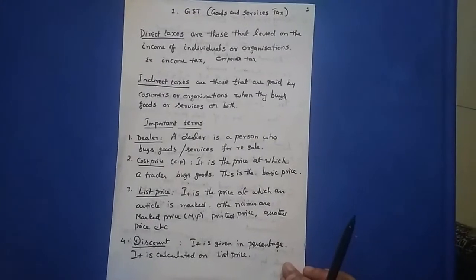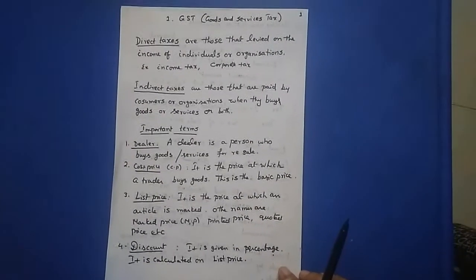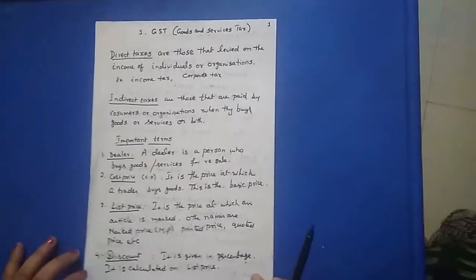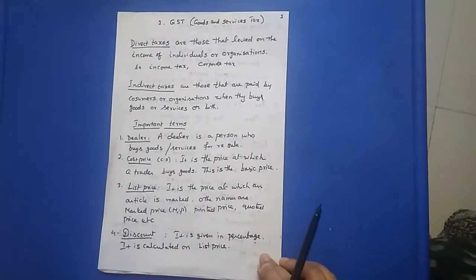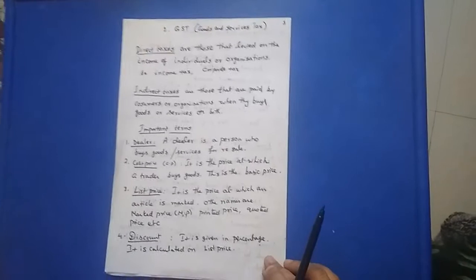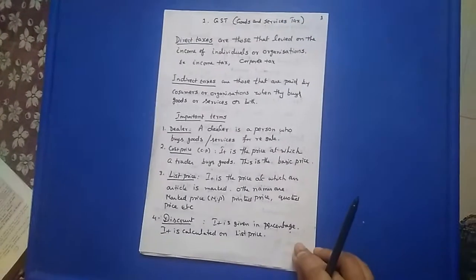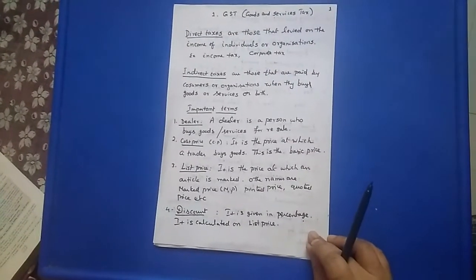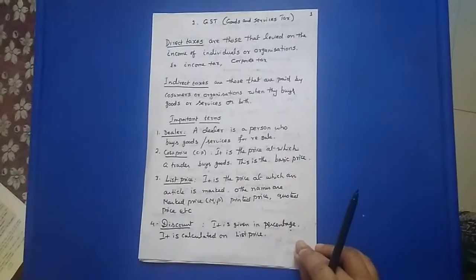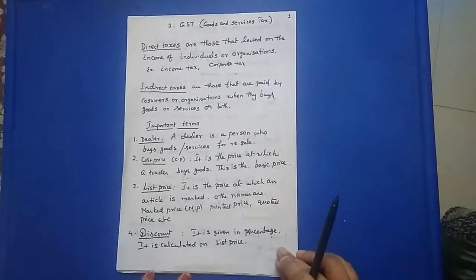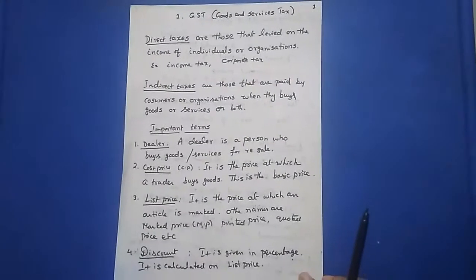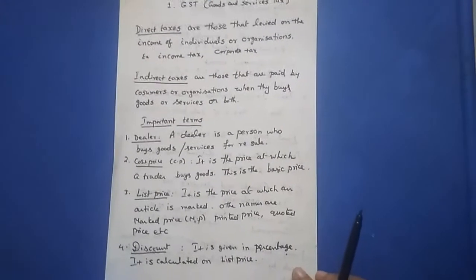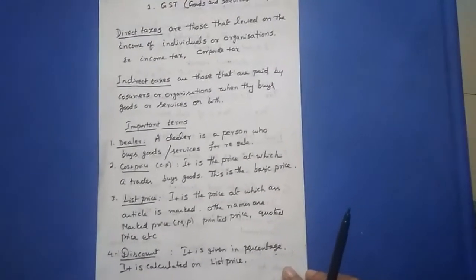In India, we have two types of taxes. One is direct tax, another is indirect tax. Direct taxes are those levied on the income of individuals or organizations — for example, income tax, corporate tax, etc. Indirect taxes are those paid by consumers or organizations when they buy goods or services.